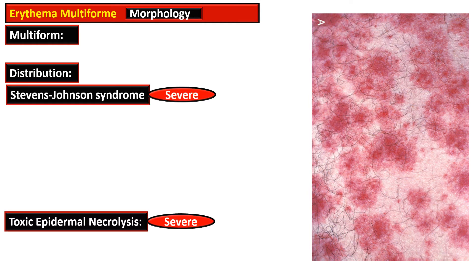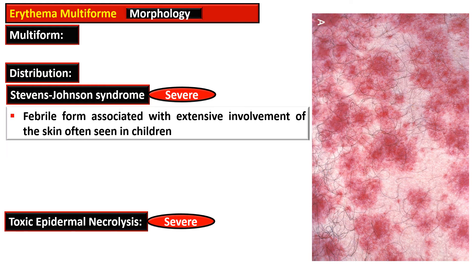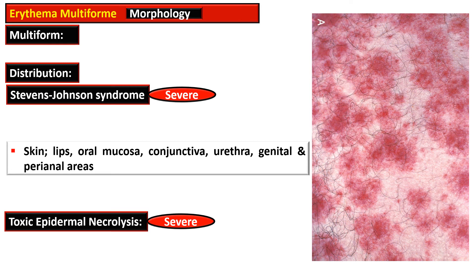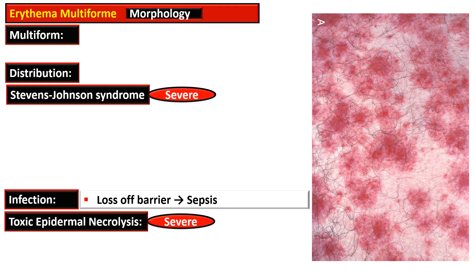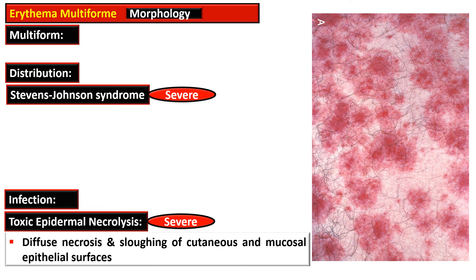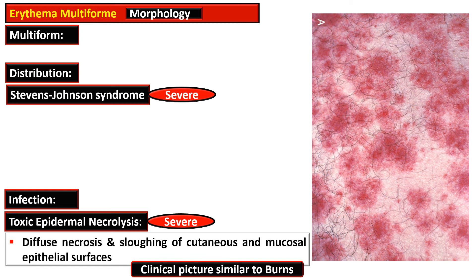Two severe, often lethal forms are Stevens-Johnson syndrome and toxic epidermal necrolysis. Stevens-Johnson syndrome is a febrile form with extensive involvement of the skin, lips, oral mucosa, conjunctiva, urethra, genitals, and perianal area. Sloughing of the skin leads to loss of the infection barrier and sepsis. Toxic epidermal necrolysis is characterized by diffuse necrosis and sloughing of cutaneous and mucosal epithelial surfaces, producing a clinical picture similar to burns.